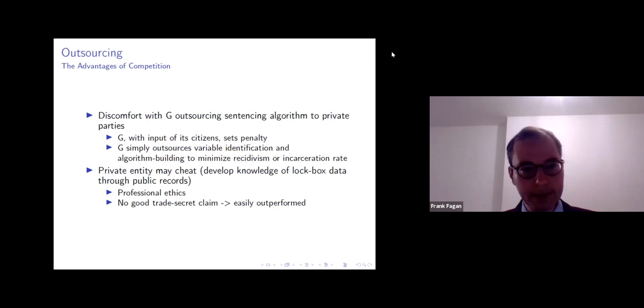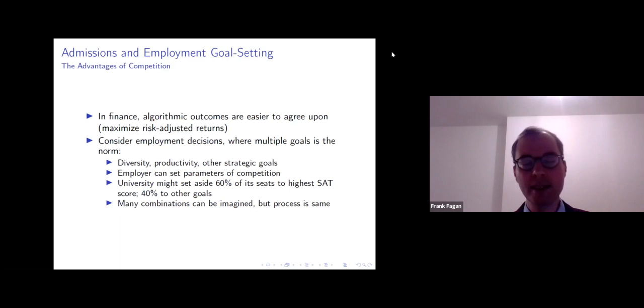So let me just turn briefly to admissions and employment before concluding. So I think in the paper, what really the main issue that tends to come up around university admissions and employment is how to set the goals. In finance, setting algorithmic outcomes is generally straightforward because you can just maximize risk-adjusted returns. But when you're thinking about employment decisions or university admissions, there's multiple goals at stake. So diversity, productivity, other strategic goals of the employer can all come into play.